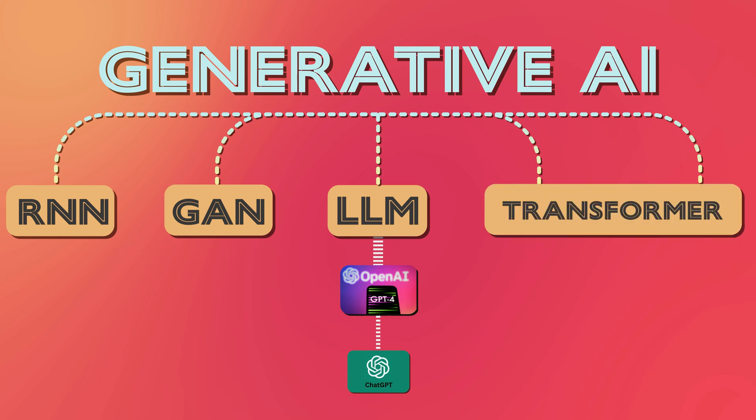The transformer architecture is often used as the basis for LLMs because it is particularly effective at modeling the complex relationships between words and phrases in natural language text. To sum up: LLMs are a type of generative AI designed to understand and generate human language, while generative AI more broadly is designed to create new content based on existing patterns, which includes LLMs and several other forms.